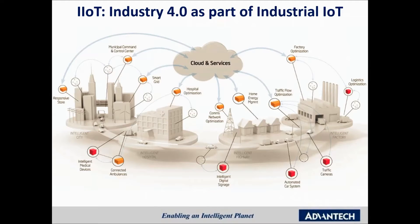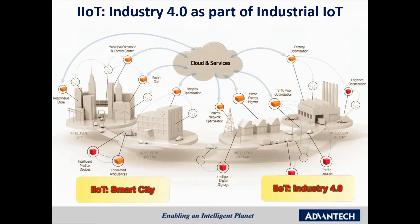Within the industrial IoT, we recognize two major segments. On the left side, you will see the smart city with infrastructure, building automation, water, wastewater, and energy. On the right side, you see the smart factory or Industry 4.0 with production facilities and all logistics and facilities around it. Advantech is focused on applications in both areas with application-ready platforms addressing the needs of these particular applications.